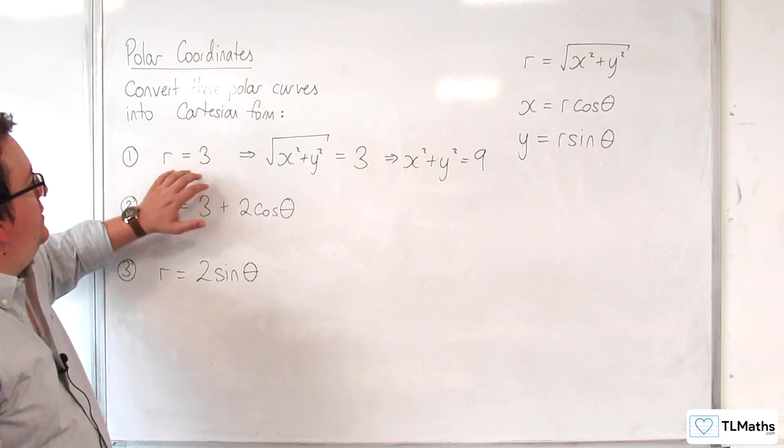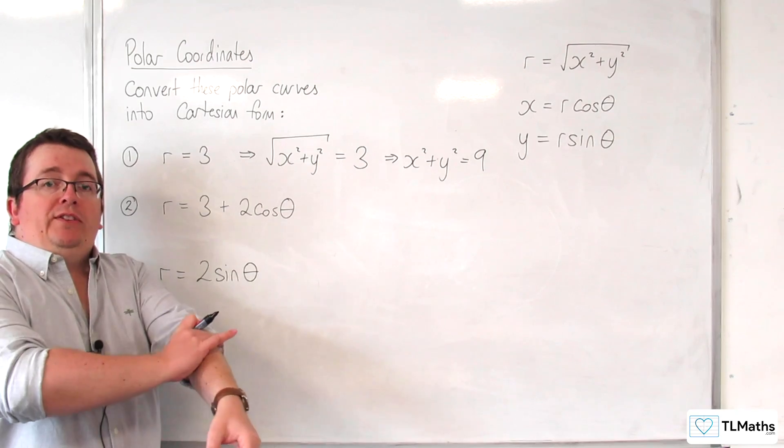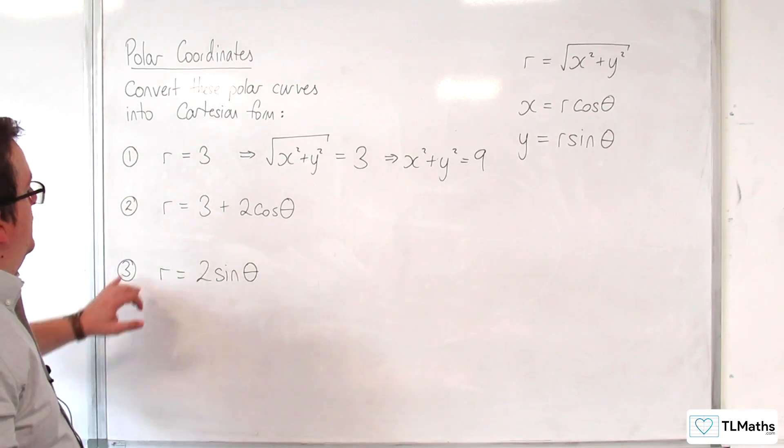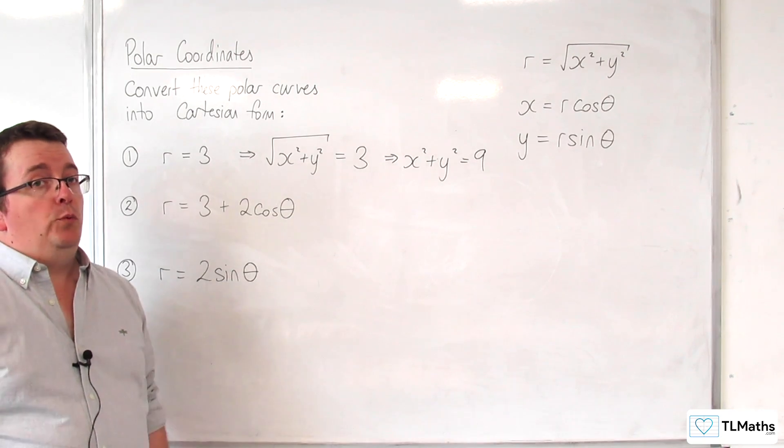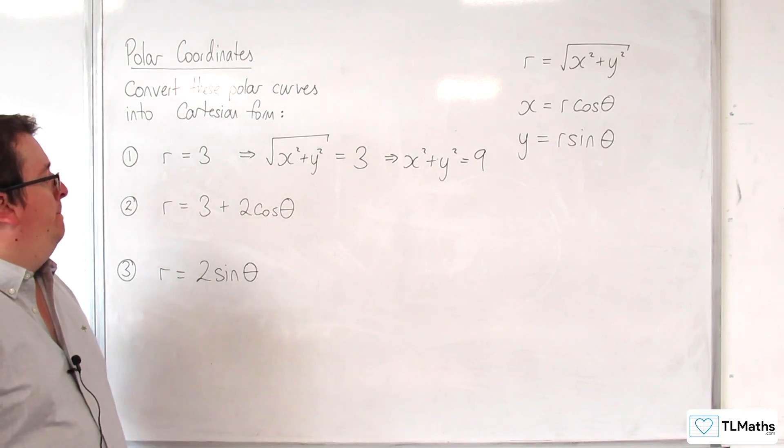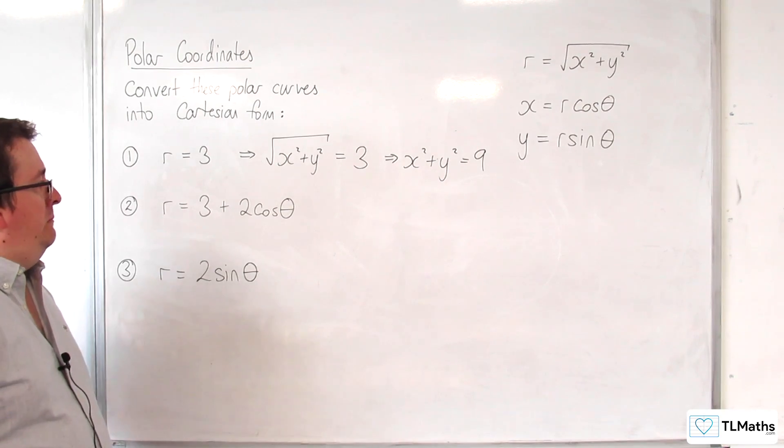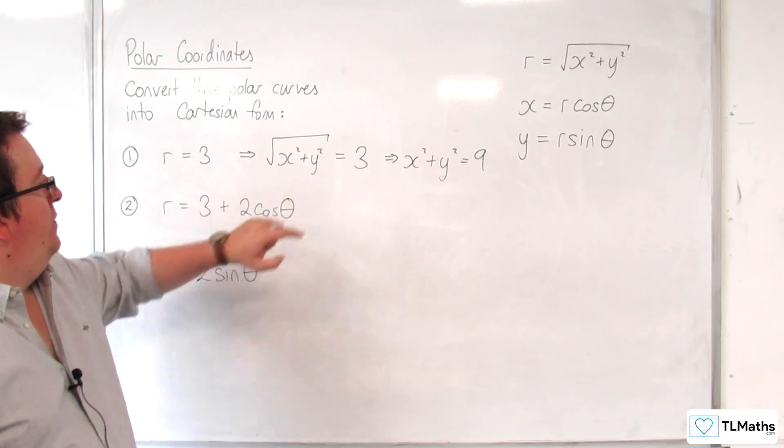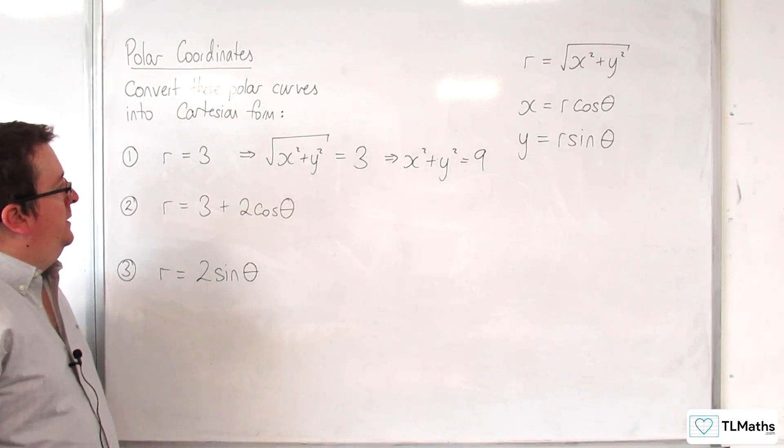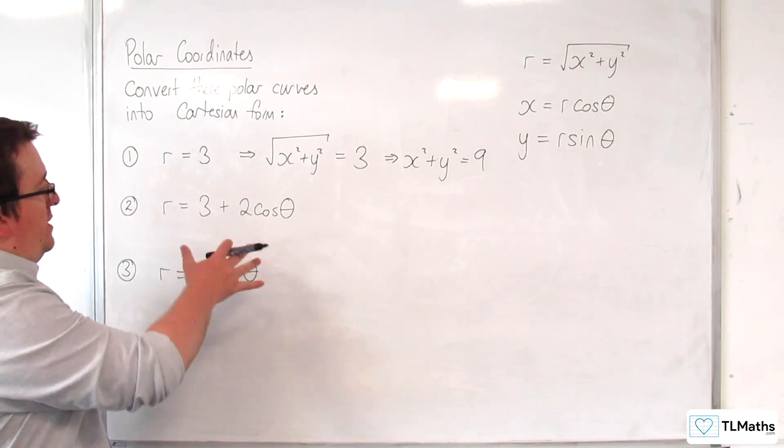And we'll look at this and generalize that in more detail in the next video. Now, for the next one, R is equal to 3 plus 2 cosine theta. This is one of the curves that we're going to be exploring in a few videos' time. Now how do we convert that one? Because we can clearly see that the R can be swapped with that, just as we did in the previous example. But how are we going to deal with the rest of it?